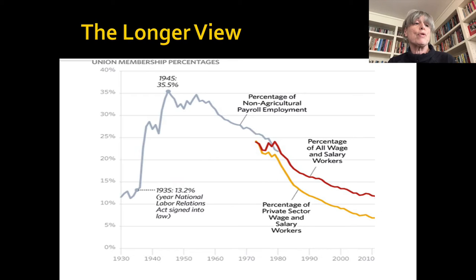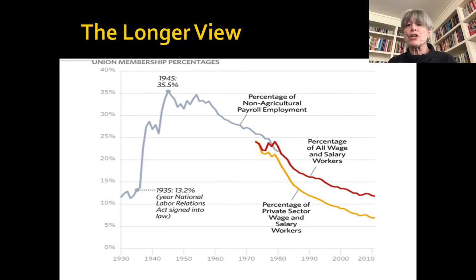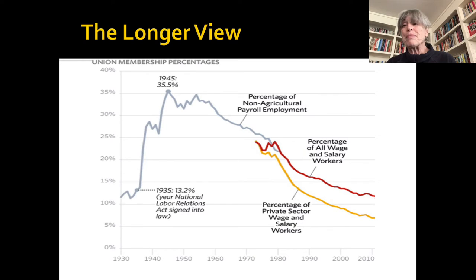The next slide gives you a graphic representation of the longer view, where you can see that prior to the late 1930s unionization levels were similar to today. 1935 is the banner year here. That's when the Wagner Act, officially called the National Labor Relations Act, often referred to as Labor's Magna Carta, was signed into law under FDR. Unionization spikes upward shortly afterward, and especially during the Second World War — that's the real dramatic story of union rise after 1935.